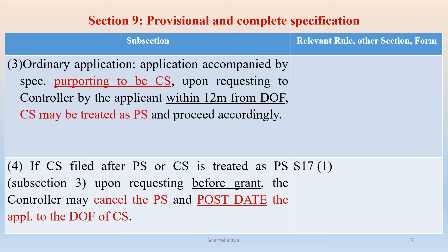Subsection 4: If a complete specification is filed after a provisional specification, or in case a complete specification is treated as a provisional specification as in the case of Subsection 3, upon requesting before grant, the controller may cancel the provisional specification and post-date the application to the date of filing of the complete specification. The relevant other section is Section 17, Subsection 1.